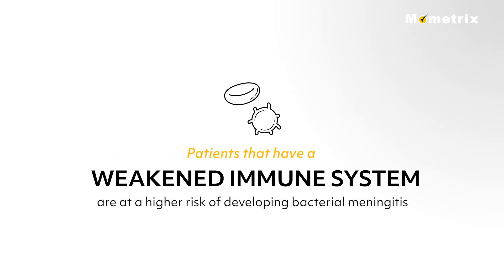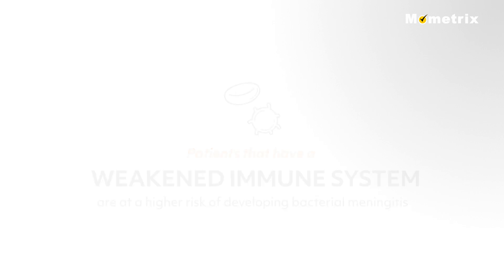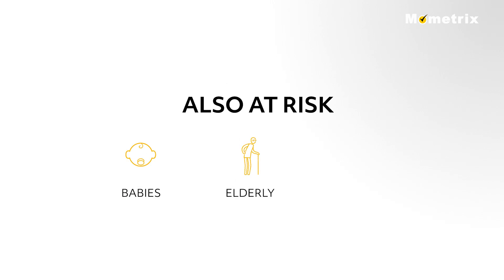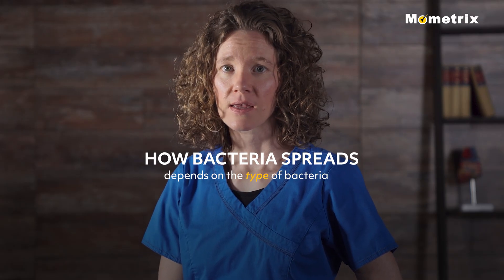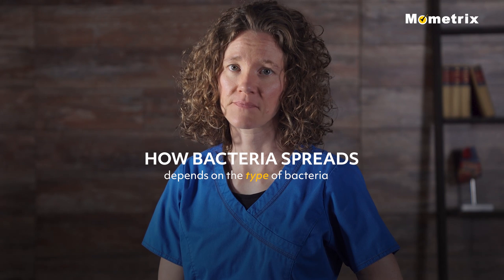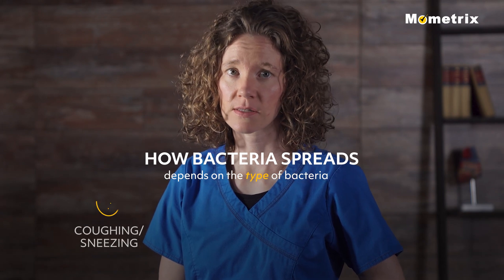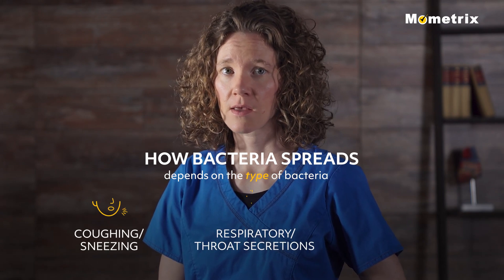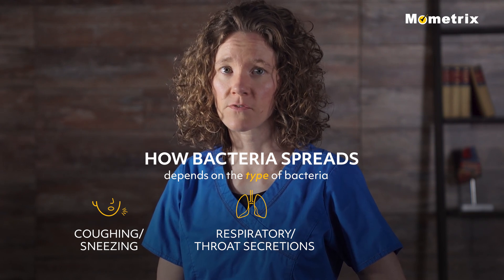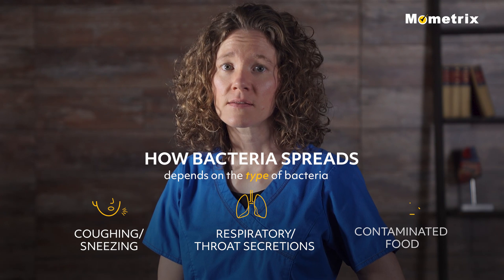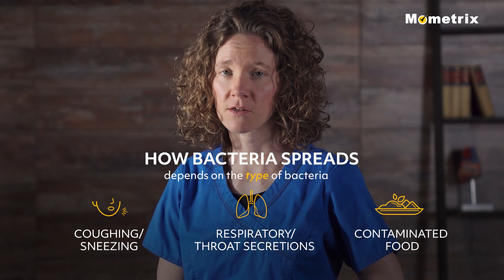Patients that have a weakened immune system are at a higher risk of developing bacterial meningitis. Babies and the elderly are also at an increased risk, as well as people gathered in large groups such as college campuses. How the bacteria is spread depends on the type of bacteria. Some types are airborne and spread by coughing or sneezing, by sharing respiratory or throat secretions such as saliva from coughing or kissing, and some are spread by eating contaminated food.